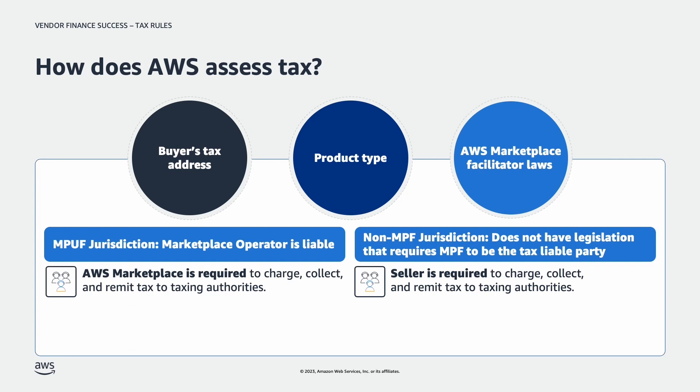If AWS, as a Marketplace operator, is considered the facilitator, then AWS is liable to charge, collect, and remit tax to taxing authorities. AWS will also determine which transactions – B2B and/or B2C – they must collect indirect taxes on. Any jurisdictions where AWS is required to charge and collect tax, AWS will do so.